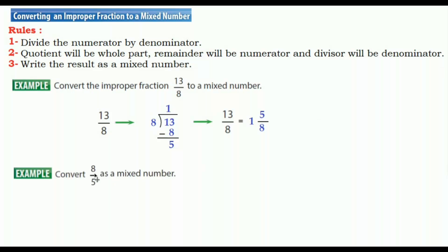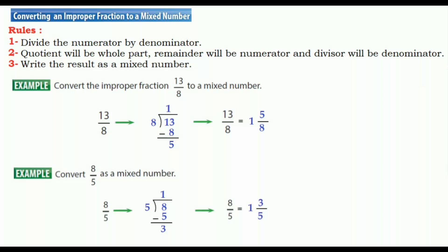Another example: convert 8 over 5 as a mixed number. We use long division. How many 5s are in 8? One. 1 times 5 equals 5. Then subtract: 8 minus 5 equals 3. Now it's easy to write as a mixed number — the quotient is the whole number, the remainder is the numerator, and the divisor is the denominator. The answer is 1 and 3 over 5.